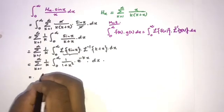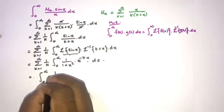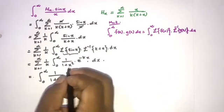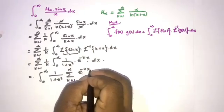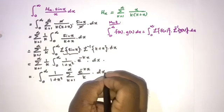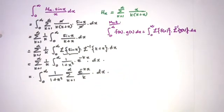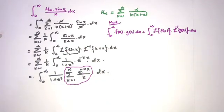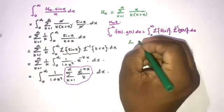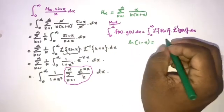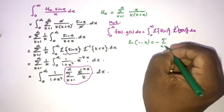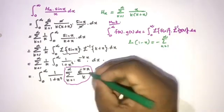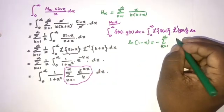We switch the sigma notation and integral again. We have the integral from 0 to infinity of 1/(1+x²) times the sum from k equals 1 to infinity of e^(−kx)/k dx. Now we use the series representation: natural log of (1 minus t) equals minus sum from n equals 1 to infinity of t^n over n.